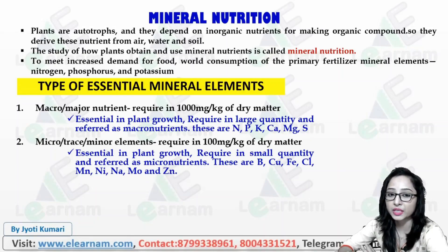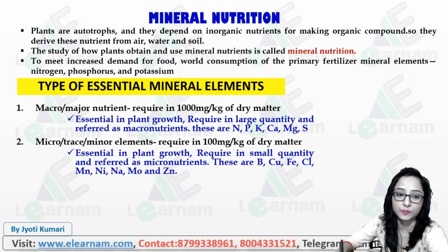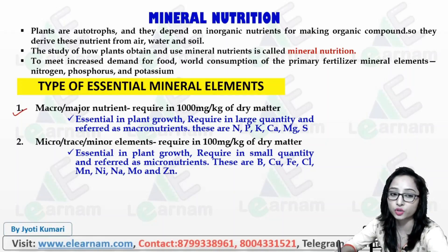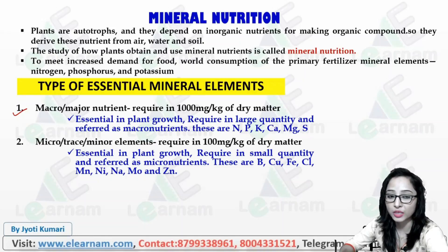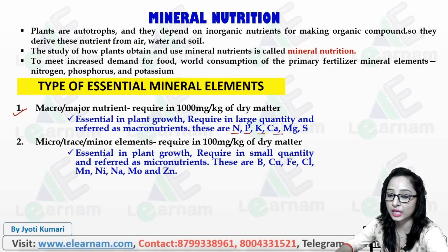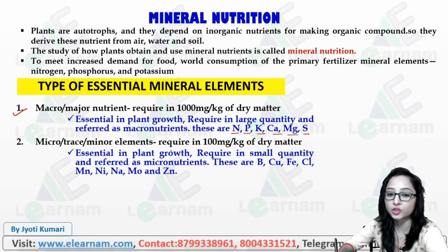What is the meaning of minerals in a category? The first category is macronutrients. What is the amount in macronutrients? You can see which compounds are nitrogen, phosphorus, potassium, calcium, magnesium and sulfur.